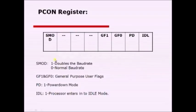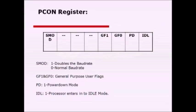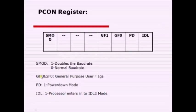Let us see one more register: PCON, the power control register. It is an 8-bit register. The MSB is SMOD, followed by GF1 and GF0. If SMOD is programmed to 0, we use the normal baud rate. If SMOD is programmed to 1, the baud rate is doubled. GF1 and GF0 are two general-purpose user flags.